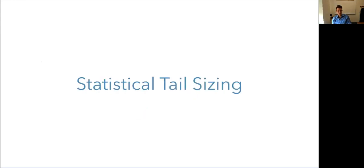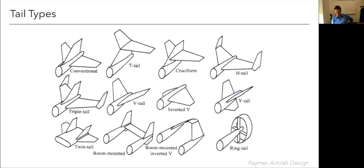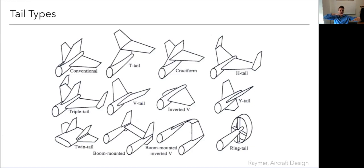To wrap up, let's briefly discuss tail sizing and configurations from Dan Raymer's book. Tails are like a fuselage — you don't want them bigger than needed since they add weight and wetted area. The T-tail gets the horizontal tail out of the fuselage wake or engine exhaust for cleaner air, and the horizontal surface acts like a winglet on the vertical tail, making it more effective. However, T-tails are prone to flutter due to the weight at the top, and can be dangerous during deep stall if the wing wake blankets the tail, making elevators ineffective.